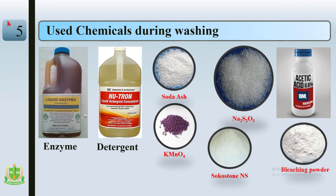Let's talk about chemicals used during washing. First is enzyme — its function is bio-stoning, bio-polishing, and bio-desizing. Next is detergent, which acts as a cleaning agent — it removes impurities, mineral oil, and contaminants from garments. Soda develops an alkaline medium and enhances the bleaching effect.